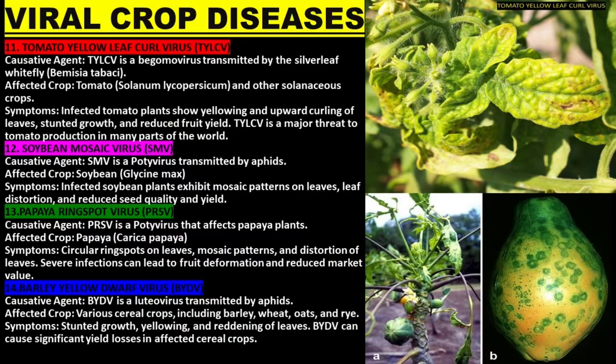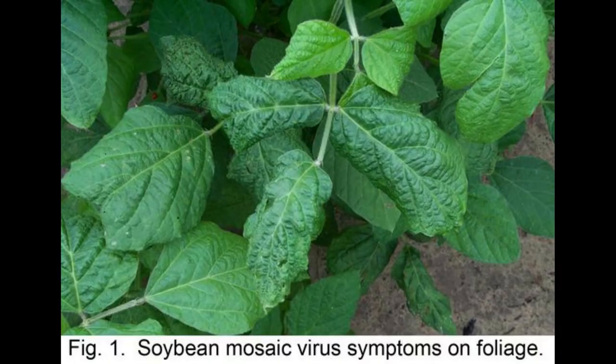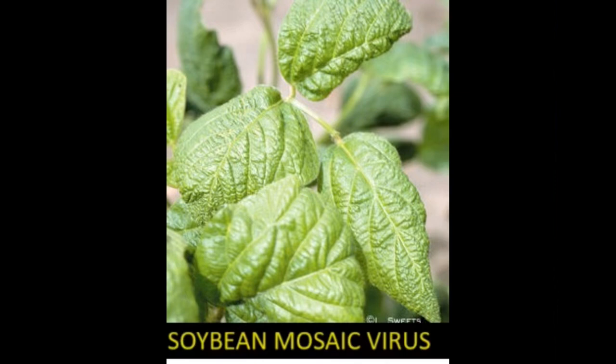Soybean Mosaic Virus is a potyvirus transmitted by aphids. The affected crop is soybean. Infected soybean plants exhibit mosaic patterns on leaves, leaf distortion, and reduced seed quality and yield.